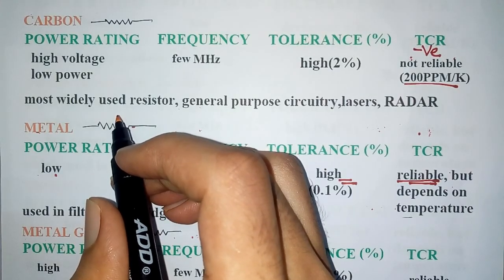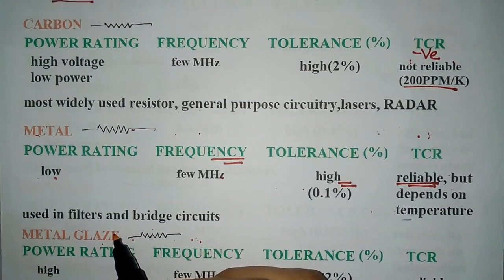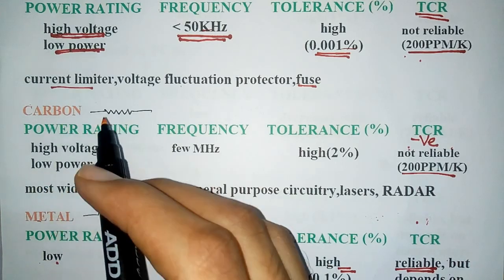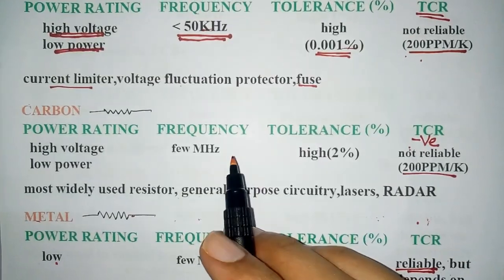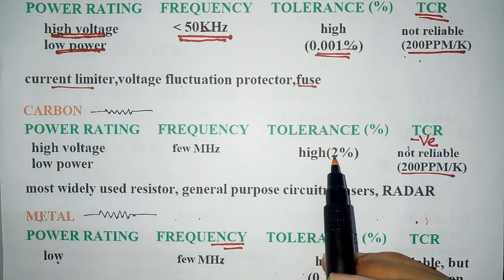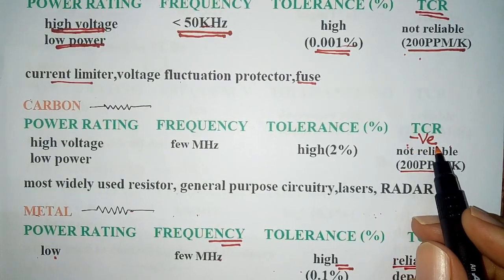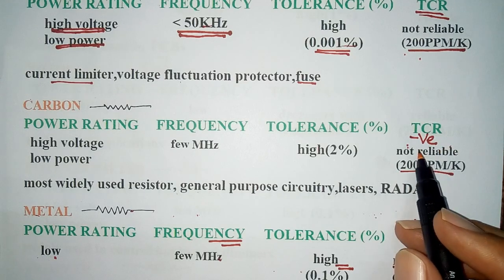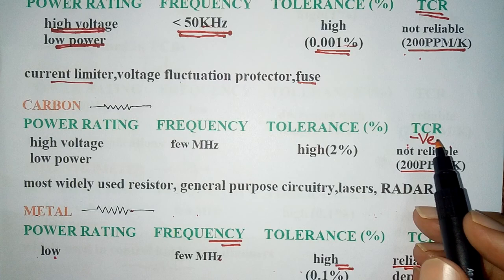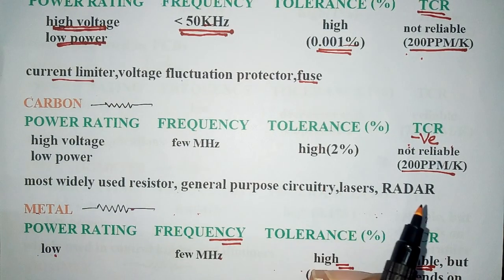Now let's look at thin film resistors: carbon, metal and metal glaze. Carbon resistor is the most widely used resistor with good frequency stability, high voltage, low power rating, and high tolerance. But its TCR is its main drawback. It sometimes exhibits negative coefficient, which means the resistance will decrease with increasing temperature. It is used widely in general purpose circuits, lasers and radars.